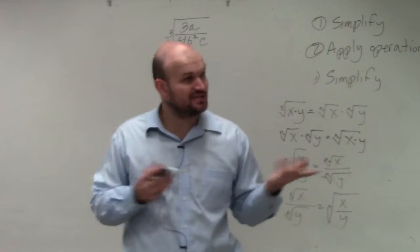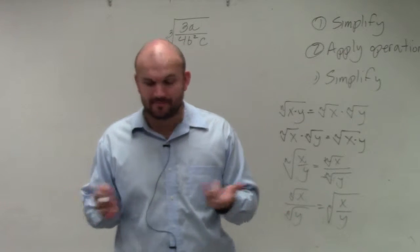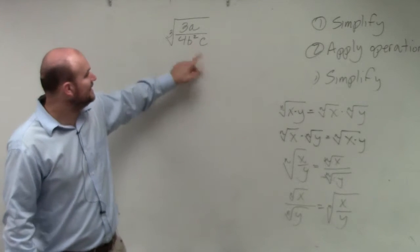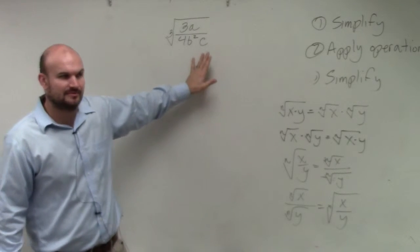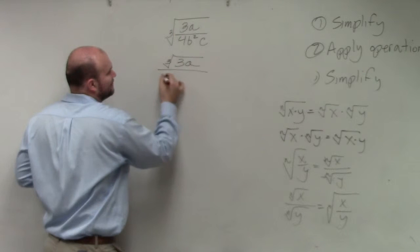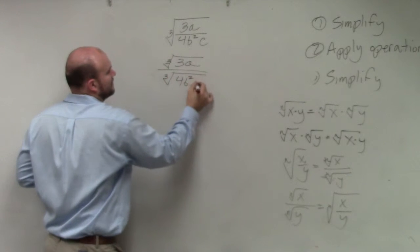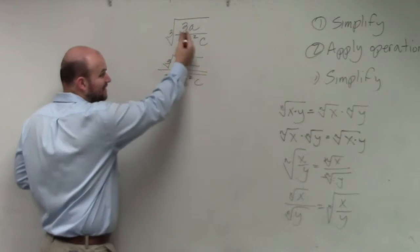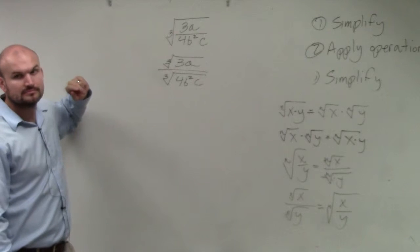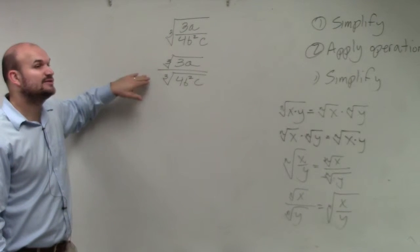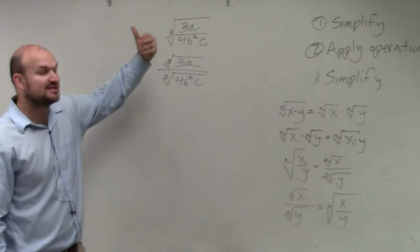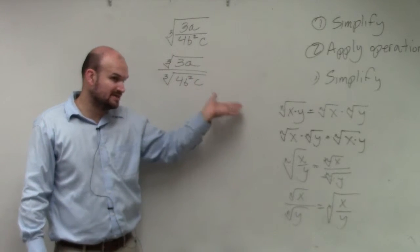So what we're going to do is when you can't actually divide further to simplify it, what we call the simplified version of a division problem is as long as there's no radical in the denominator. So basically, if we rewrote this out here, we'd have cube root of 3A. You can see that there is a cube root in the denominator. We want to write this equation without a root in the denominator. They don't actually physically divide into one another, so the simplified version would be no root in the denominator.